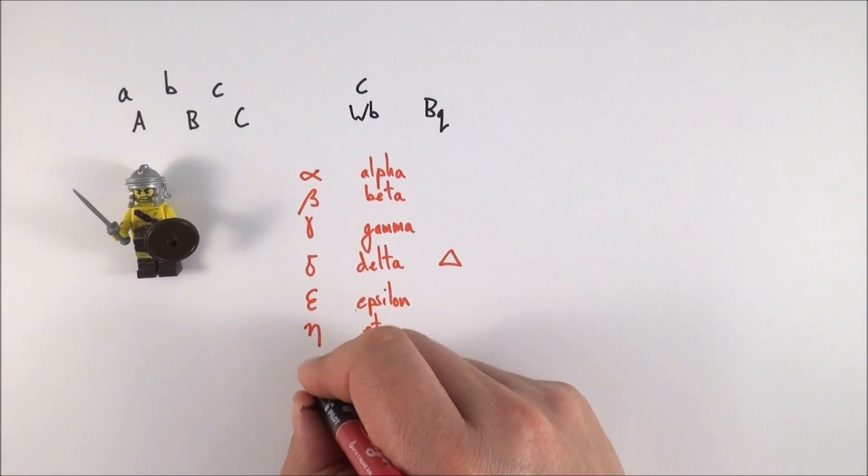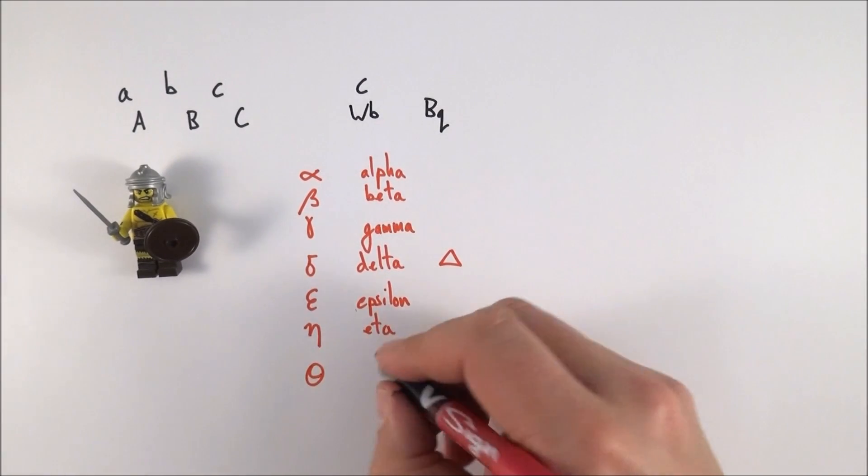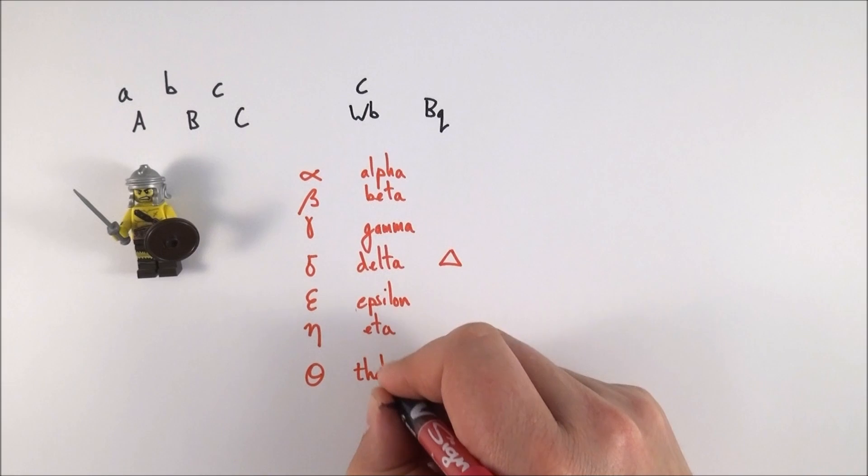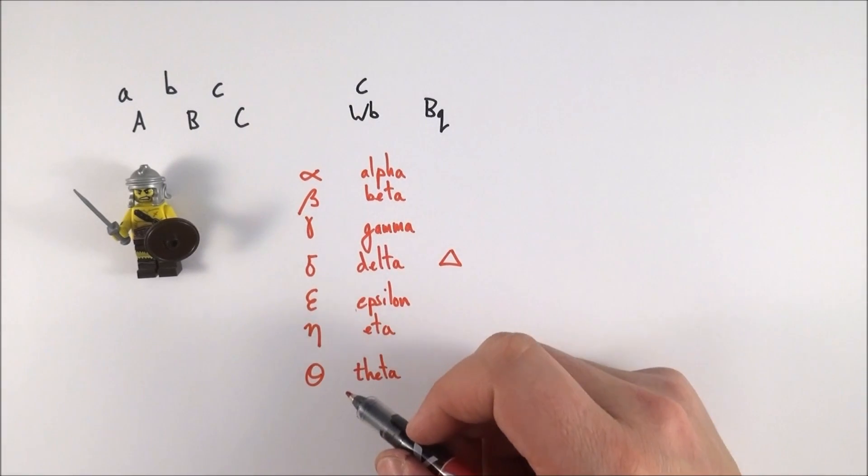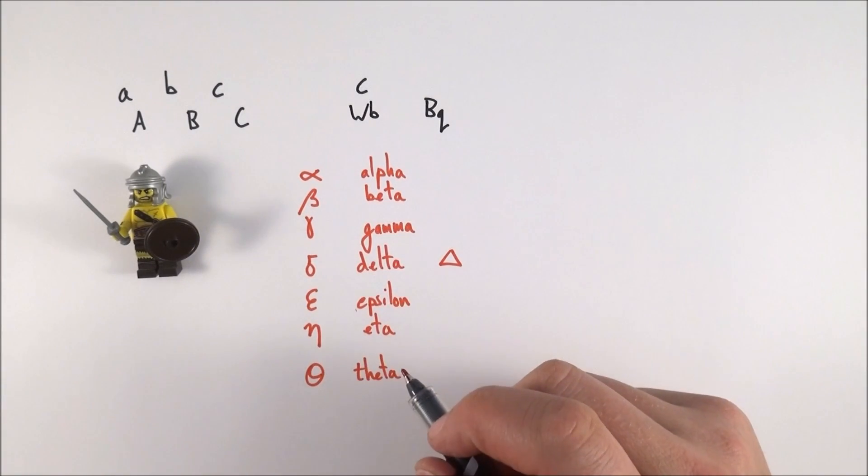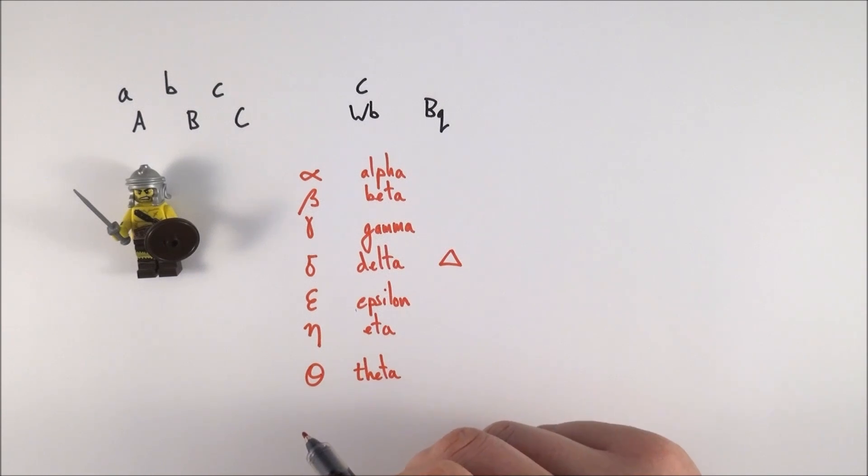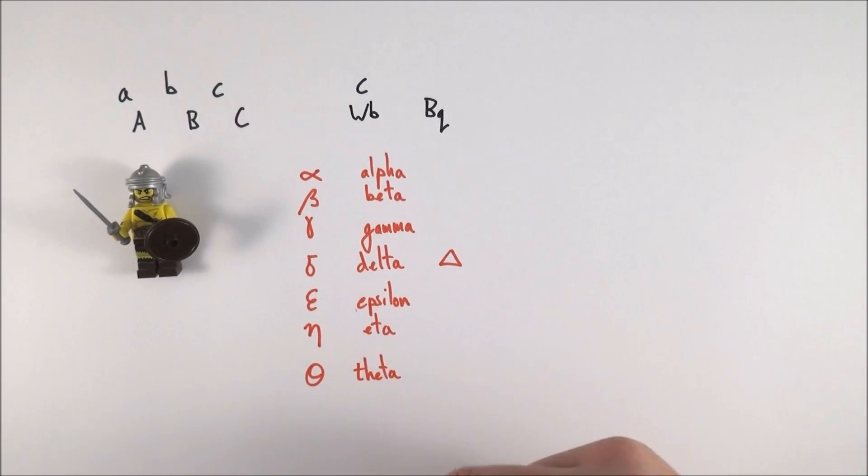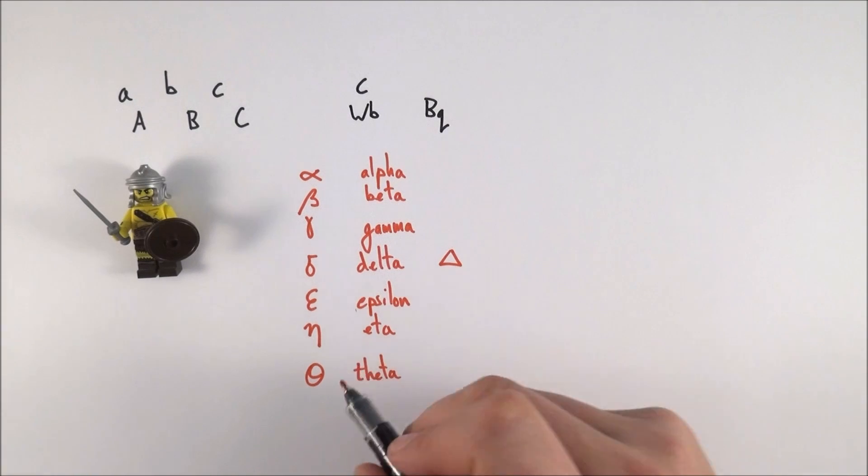After this we've got one that everybody's familiar with: theta. Theta can be used to represent angles, and that's where you might have seen it—sine theta, cos theta. But also, because this is a bit like a letter t, we can use theta to represent temperature. In physics the convention is if we're looking at temperature on the Celsius scale we use theta, but temperature on the absolute scale, the Kelvin scale, we use the letter T.